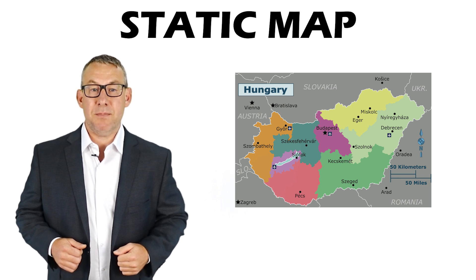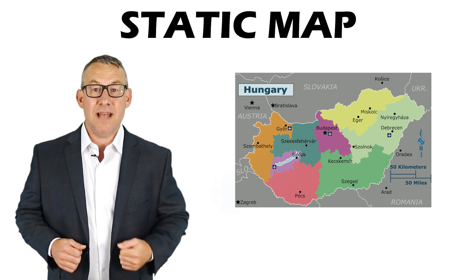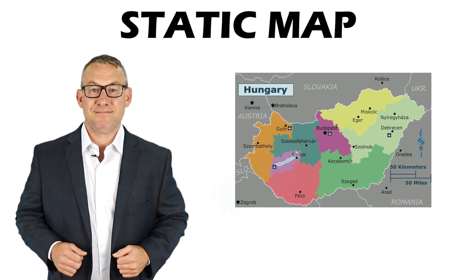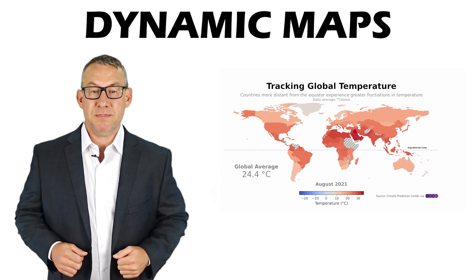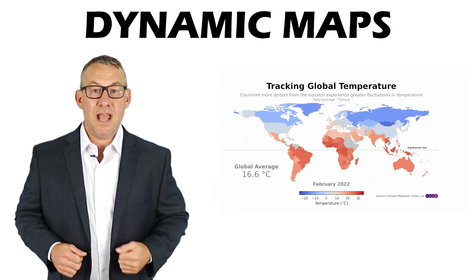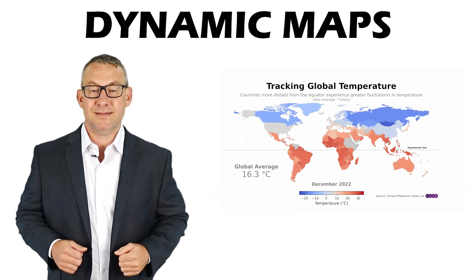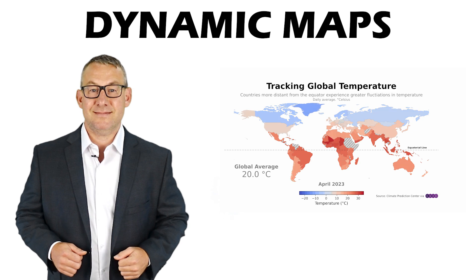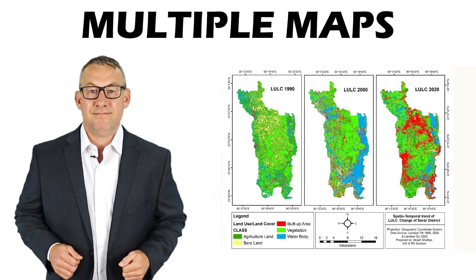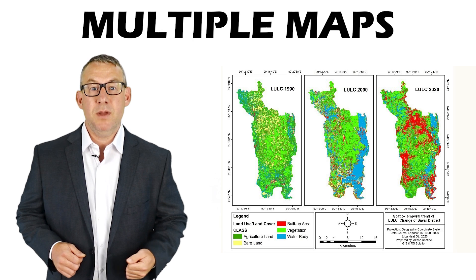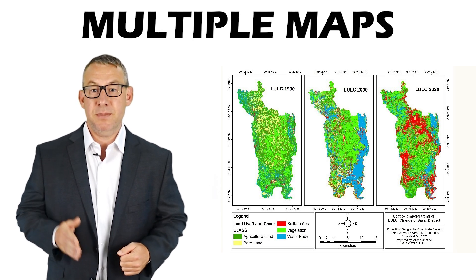A static map shows one period of time. Dynamic maps allow a user to slide between different time periods to show changes. Multiple maps can show changes over time with multiple static maps of different time periods.